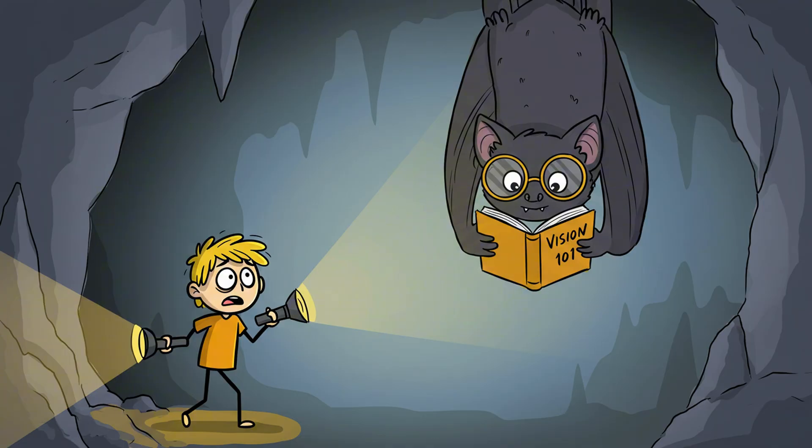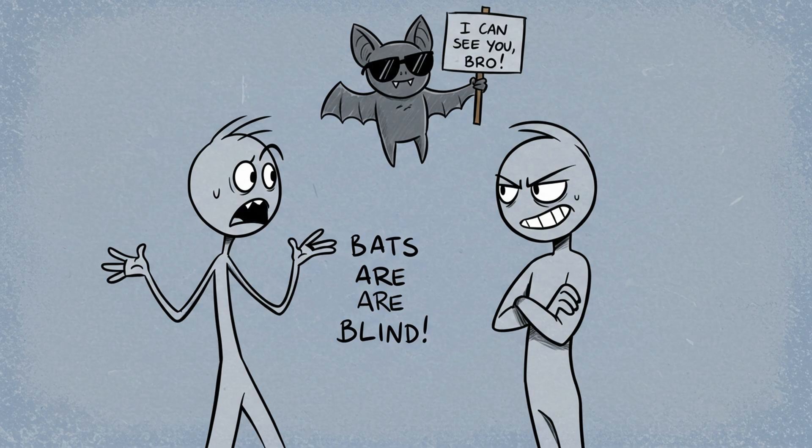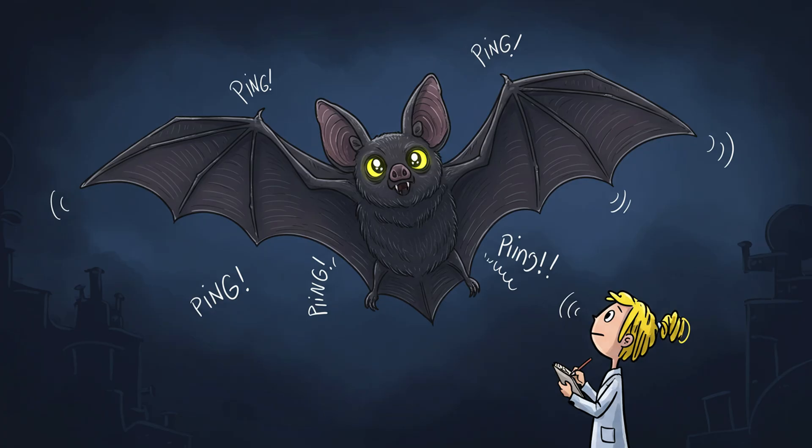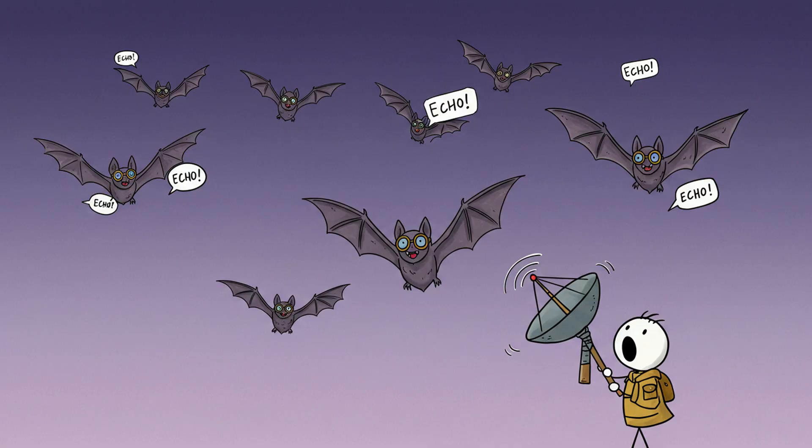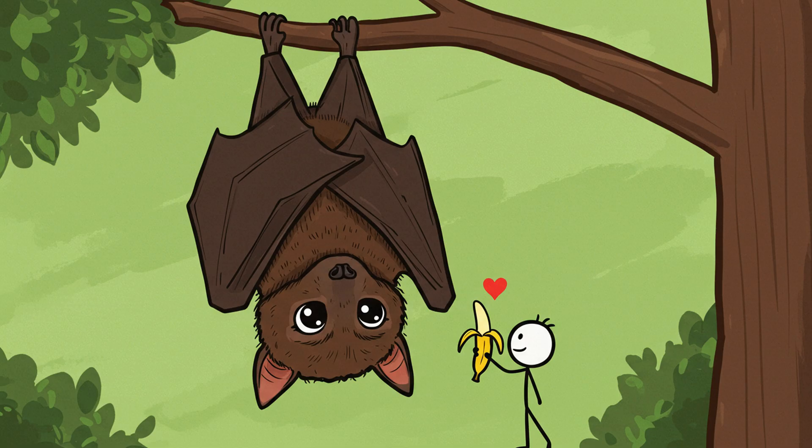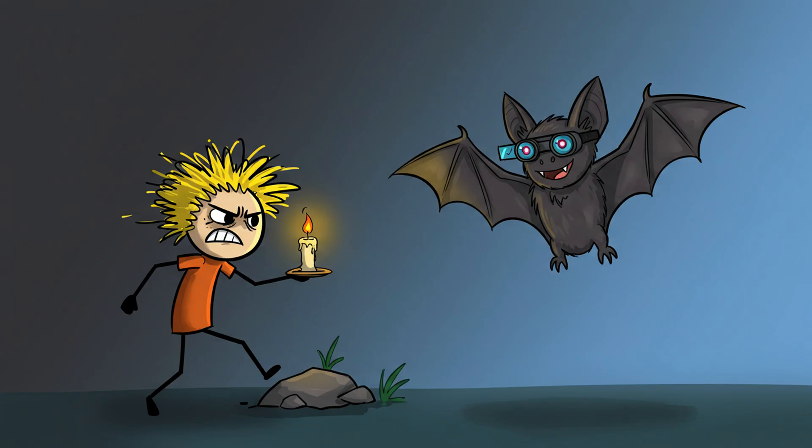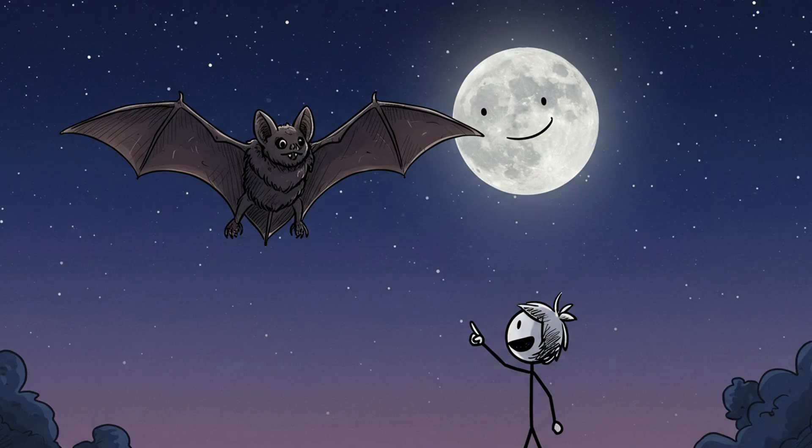Number five, blind bat syndrome. Blind as a bat. The phrase sounds certain, until you realize bats see the world better than we do in darkness. They use echolocation, sound bouncing off surfaces. But many species also have excellent vision. Fruit bats even rely more on their eyes than their ears. They aren't blind. They're specialized. They read the night like we read light. So, next time you see a bat darting through the dark, remember, it knows exactly where it's going.